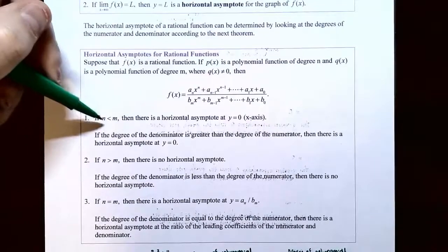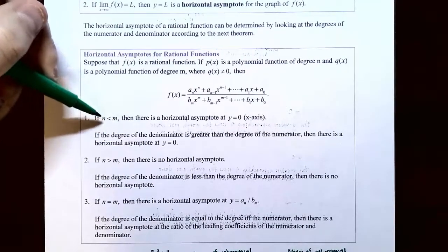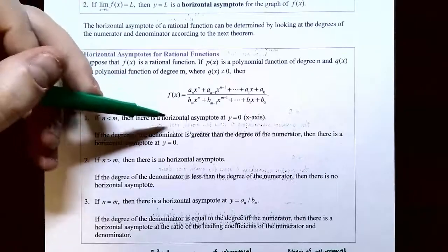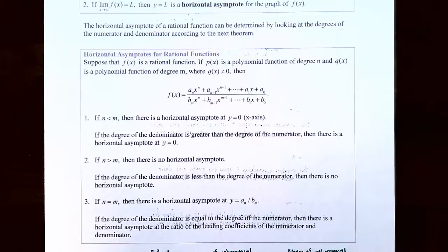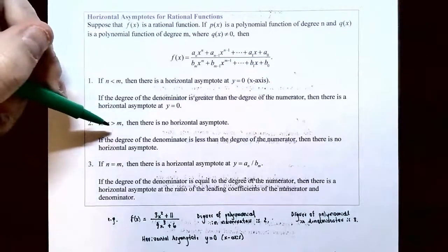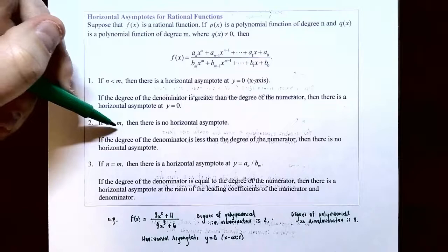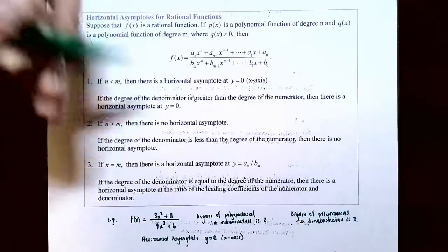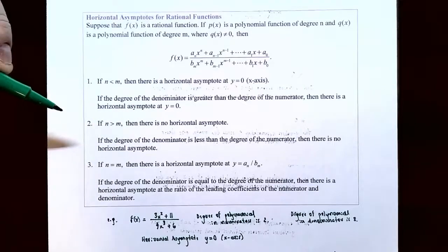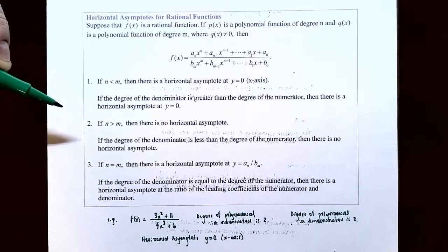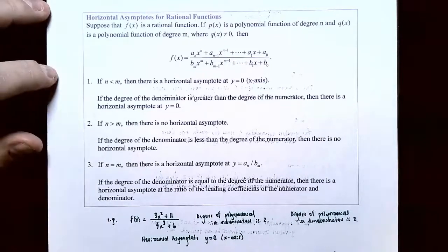Case one: if n is less than m — the degree of the numerator is less than the degree of the denominator — there is a horizontal asymptote at y equals zero, the x-axis. The graph levels out towards the x-axis on both far ends. Case two: if n is greater than m, there is no horizontal asymptote. The graph grows indefinitely large or decreases indefinitely small and does not level out.